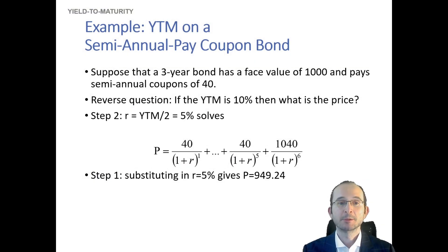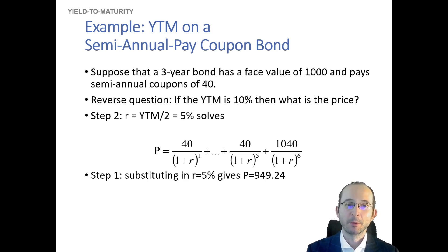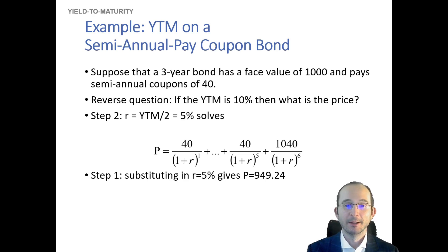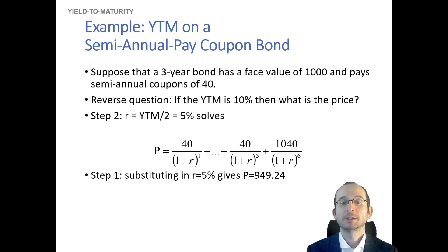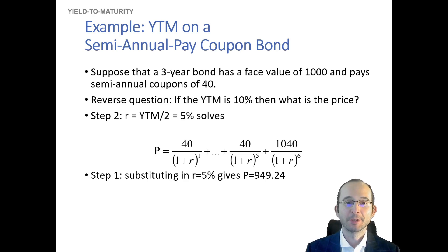Another type of question is a reverse: we know how to calculate a yield given a price, but we can also calculate a price given a yield. For a three-year bond with a face value of 1000 and a semi-annual coupon of 40, we don't know the price but we know its yield. The yield is simply the discount rate that gives you the bond's price. Since this is a higher-frequency-than-annual coupon bond, we need to convert the yield to maturity expressed in annual terms into a per-period yield.